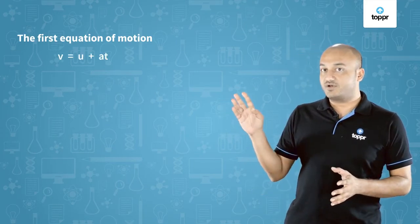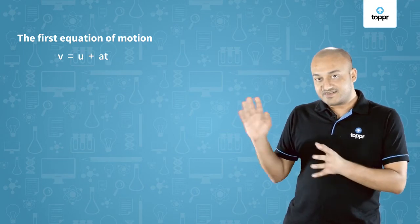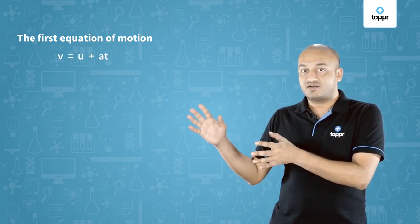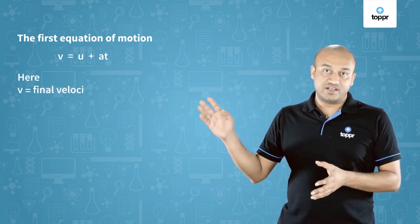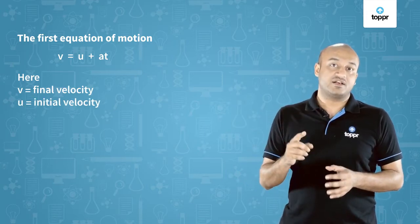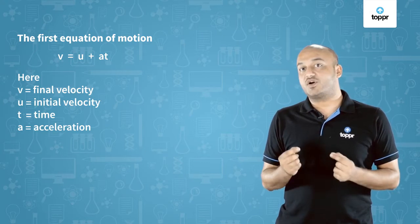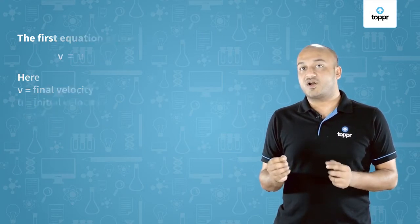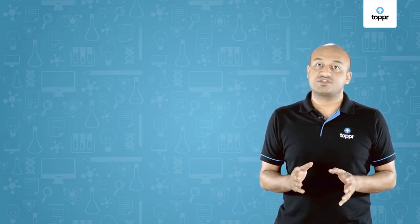The first equation is v = u + at. This equation relates the velocity with time. V is the final velocity, u is the initial velocity, t is the time and a is the value of the constant acceleration. Now we will learn to derive this equation using the graphical method.